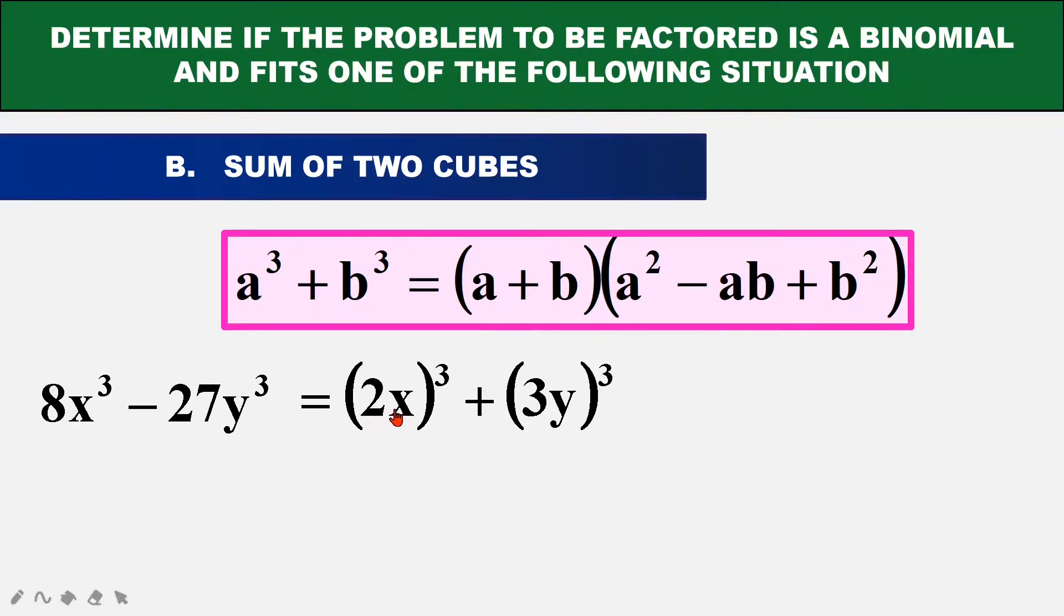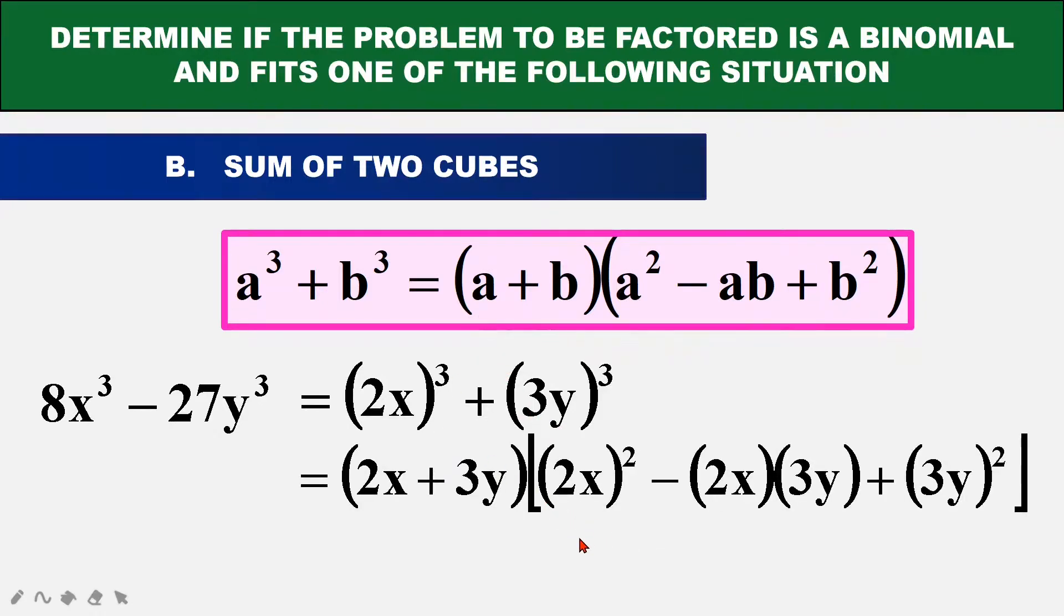Then, our A is 2X, our B is 3Y. We put them into the formula like this, where the placing of A is 2X and the placing for B is 3Y. Then we will transform it into the answer. So we have one factor over here and the other one there.